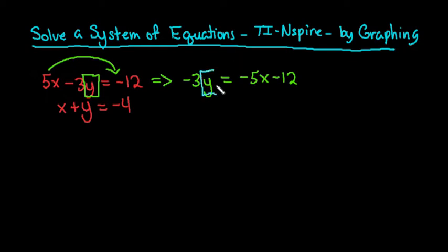We do have to get y completely by itself, so I would have to divide everything by negative 3. And when I do that, I end up with y equals... a negative divided by a negative is a positive. And then we would have positive 5 thirds x, and then the negative 12 divided by negative 3 also is positive 4. So that's our first equation.